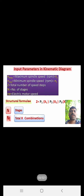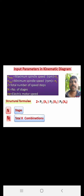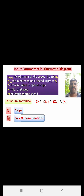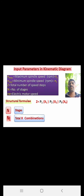Today we will go on to the next topic: the important parameters in the kinematic diagram, also called the gearing diagram. Before drawing the kinematic diagram, you need to know: n_max (maximum spindle speed, given in RPM), n_min (minimum spindle speed, denoted n1), z (total number of spindle speed steps), and n_em (electric motor speed, given in RPM).